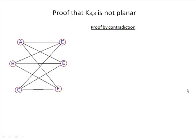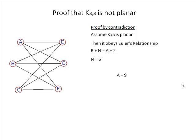Let's now look at K3,3 and see why it's not planar. Once again, it's a proof by contradiction. We assume that it is planar. If it's planar, it must obey Euler's relationship: R + N = A + 2. This time the number of nodes is 6, the number of arcs is 9. Quick calculation tells us that we must have 5 regions.